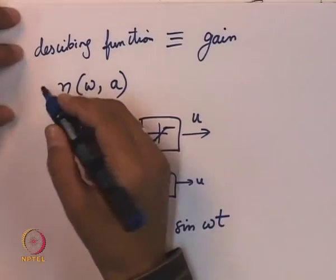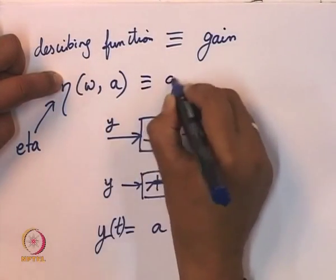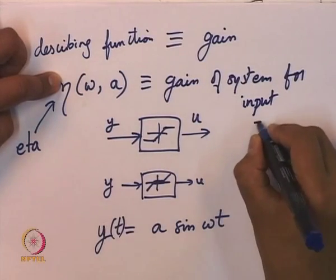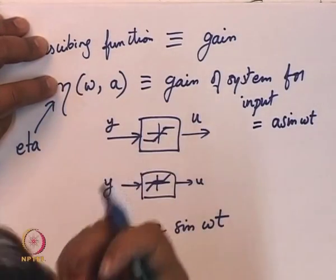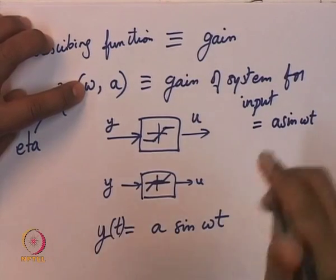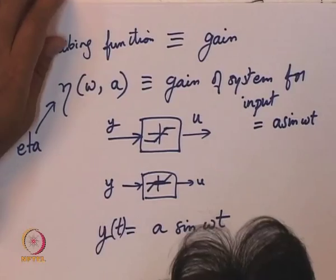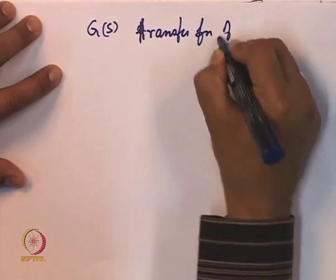We want to associate a notion of gain of this operator, where the gain can depend on the frequency ω and also on the amplitude A. These are the amplitude and frequency when the input is y(t) = A sin(ωt). We need a little more development before we reach the stage where we define the describing function as a gain. It is a complex gain — it has a real part and an imaginary part — and the motivation comes from linear time invariant systems.